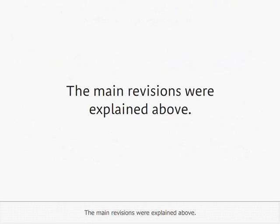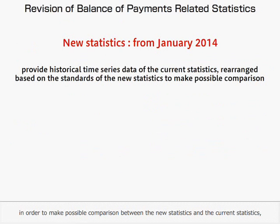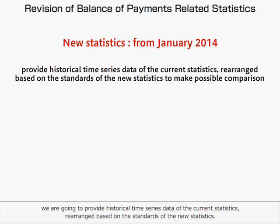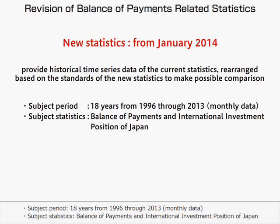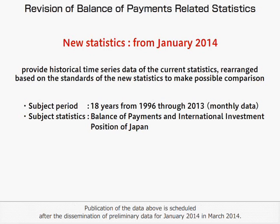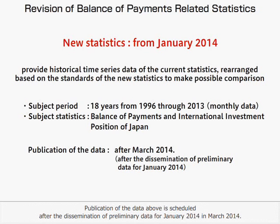The main revisions were explained above. In order to make possible comparison between the new statistics and the current statistics, historical time series data of the current statistics will be provided, rearranged based on the standards of the new statistics. The subject period covers 18 years from 1996 through 2013, as monthly data, for the Balance of Payments and International Investment Position of Japan. Publication of this data is scheduled after the dissemination of preliminary data for January 2014, in March 2014.